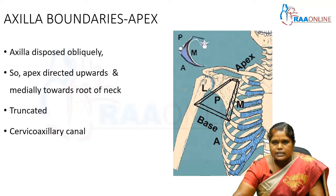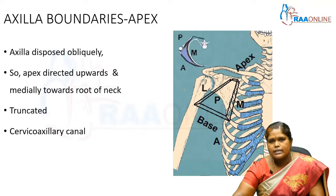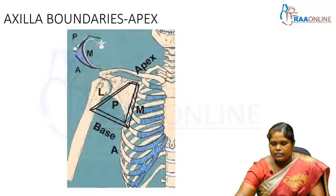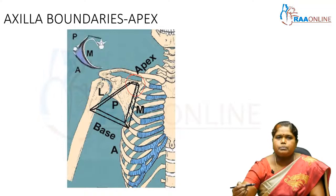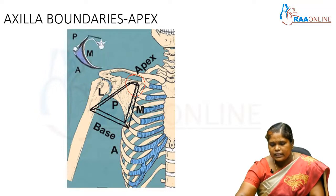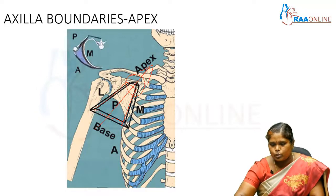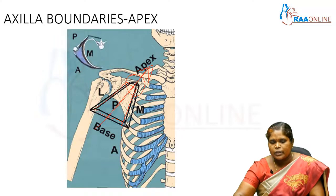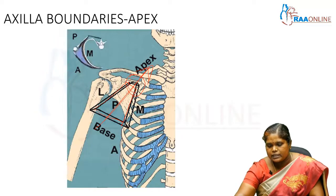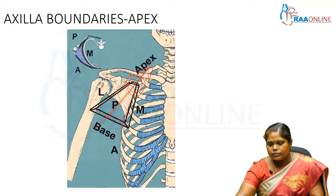Now we are going to discuss the boundaries of each part of this axillary region. We start with the apex. If we see this axilla, it is placed obliquely. The apex is directed upwards and medially towards the root of the neck.